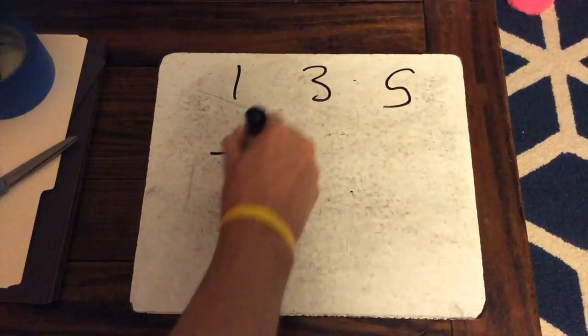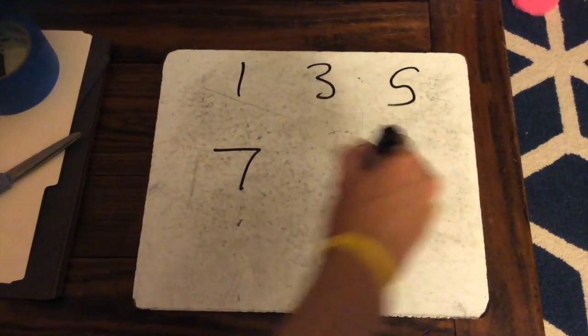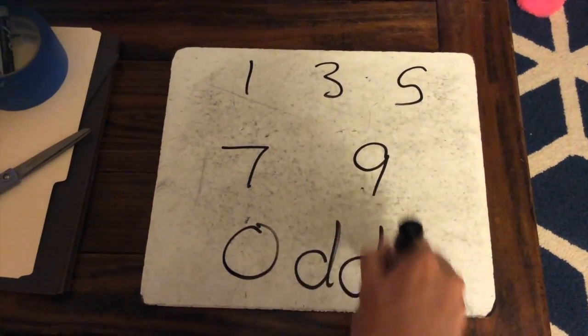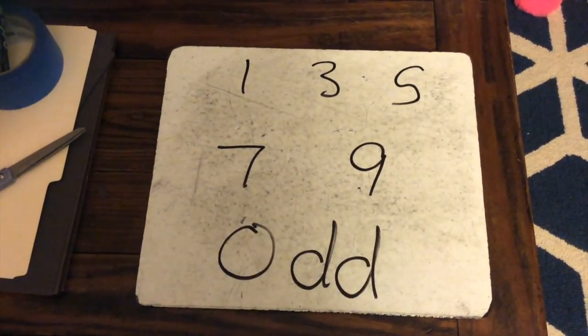But some do not: 1, 3, 5, 7, and 9 — those ones are odd.